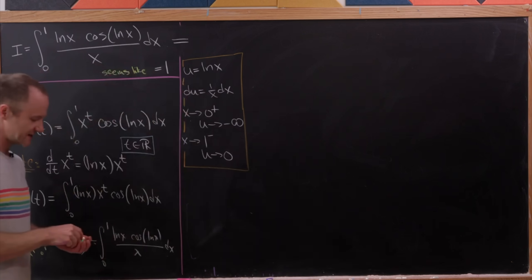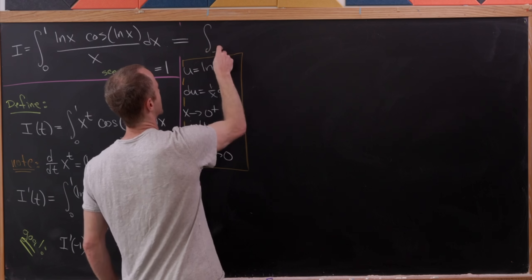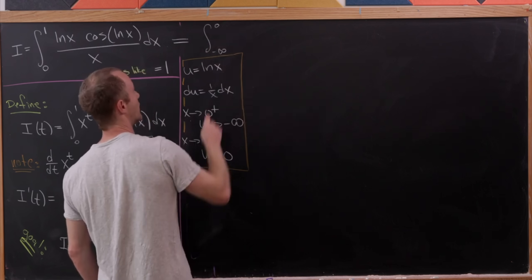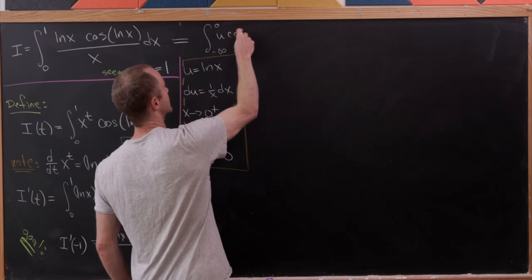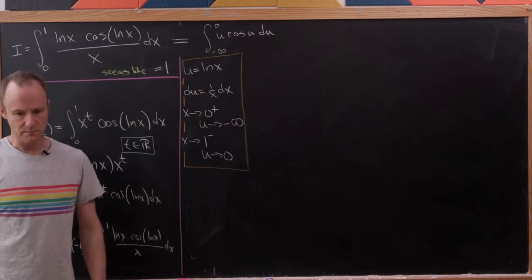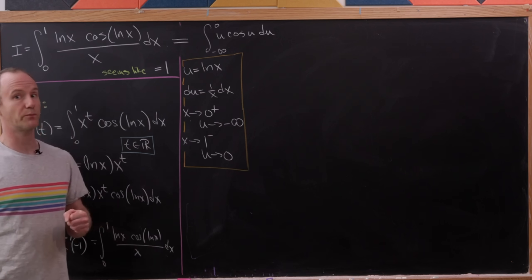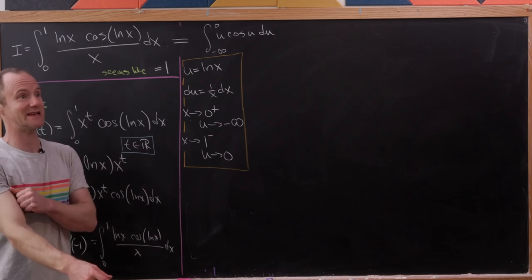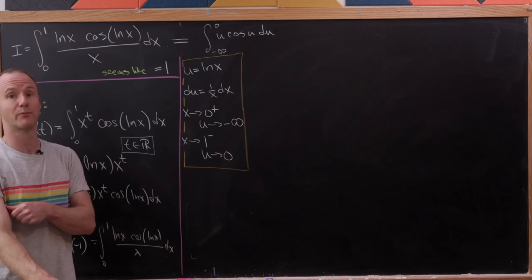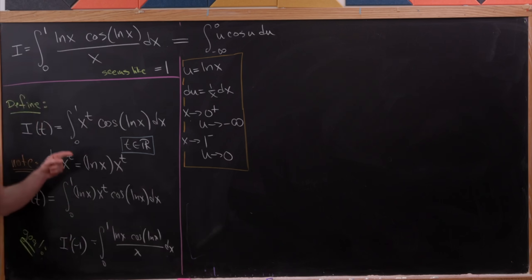The substitution transforms our integral to the integral from minus infinity up to 0 of u times cosine of u du. Whenever you have something like this — which is an improper integral — you set it up as a limit. Note that the original integral was also improper, because x equals 0 gives a 0 in the denominator.